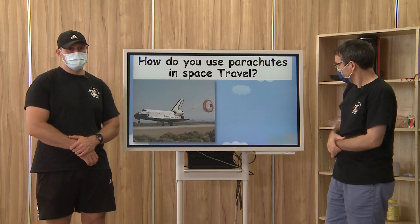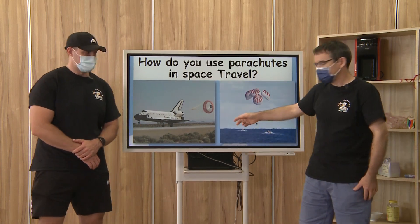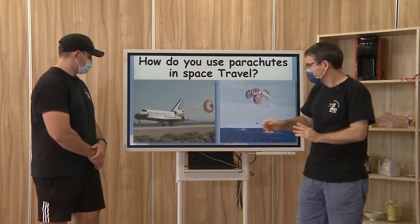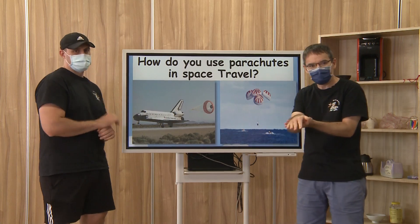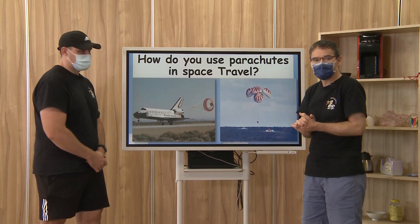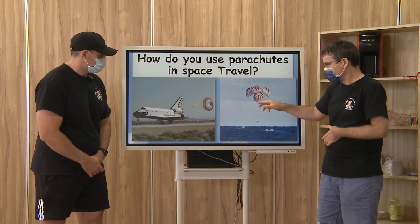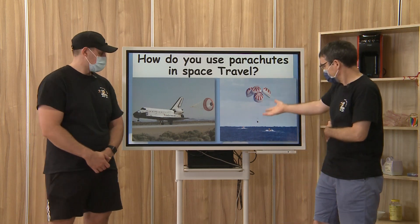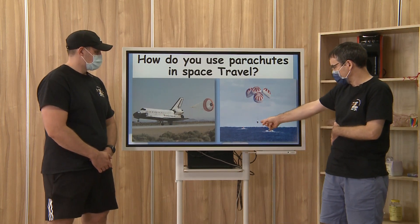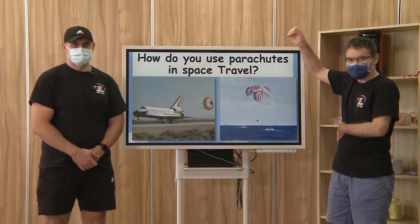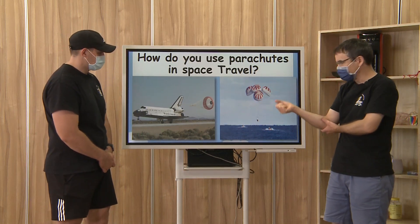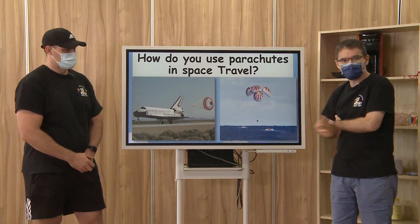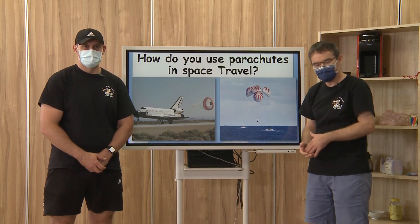So how do they use parachutes in space travel? This is the space shuttle, and it's similar to the military planes — when they're landing, it's just to help them slow down and land safely. And here's another kind — sometimes when they come from space, they land in a space capsule. It comes back into the Earth's atmosphere and they land safely into the ocean. So they parachute down and then land in the ocean, and someone comes to pick them up.